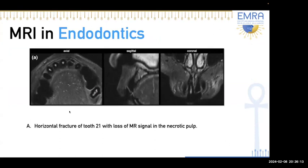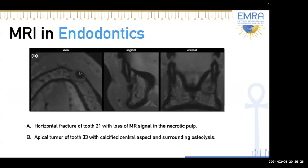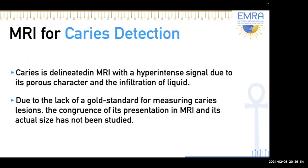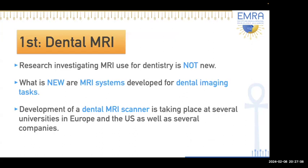In endodontics, MRI images can reveal a horizontal fracture with loss of MR signal in a necrotic pulp. They can show an apical tumor with a calcified central aspect and surrounding osteolysis on sagittal and coronal images, or an apical granuloma accompanied by hyperplasia of the basal sinus membrane — providing vital diagnostic information not visible on CBCT. MRI can also be used for caries detection, allowing delineation of hyperintense signal due to the porous nature and liquid infiltration of carious lesions.